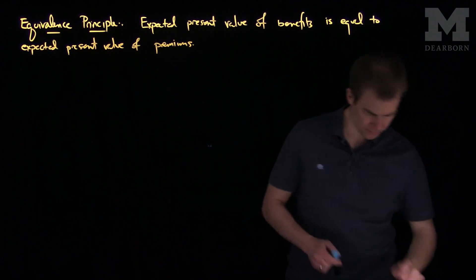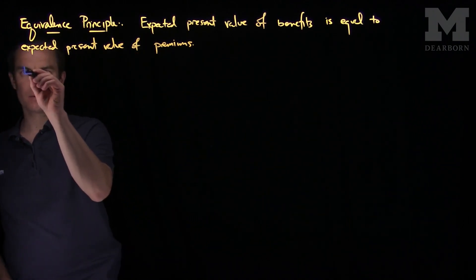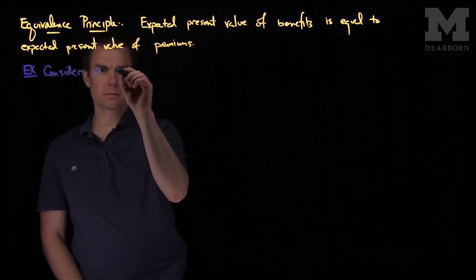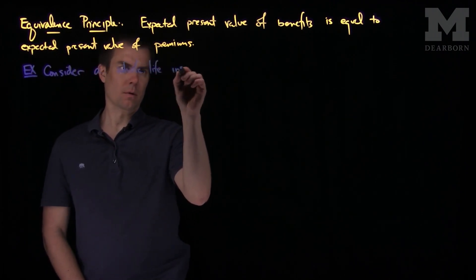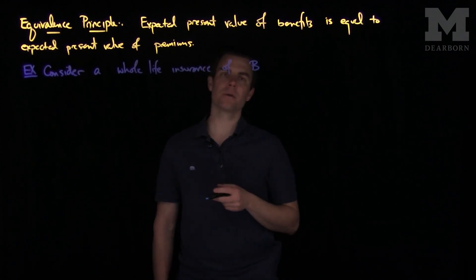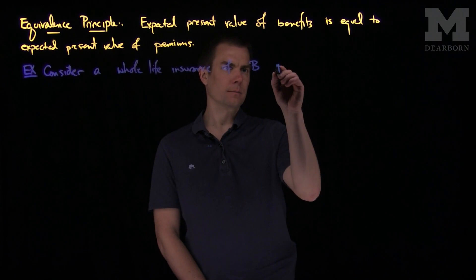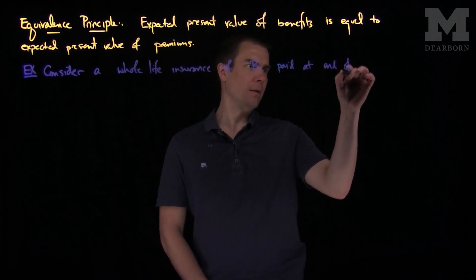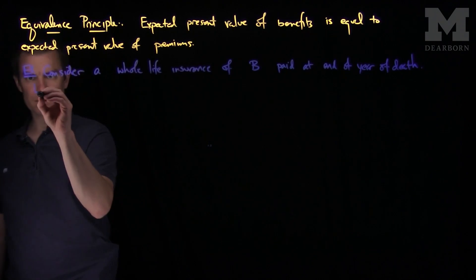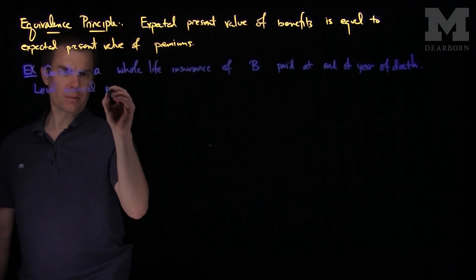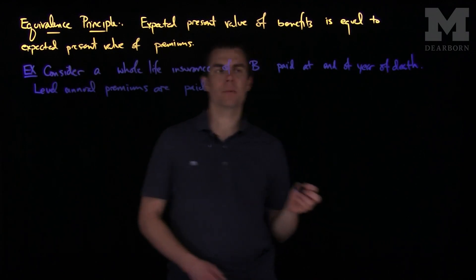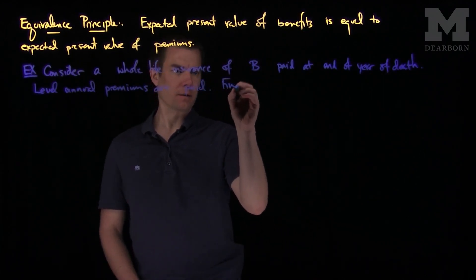Let's consider an example of this. We'll consider a whole life insurance of benefit B — so B might be a hundred thousand or a million for your insurance death benefit — paid at the end of year of death, with level annual premiums paid. Let's find the premium P.